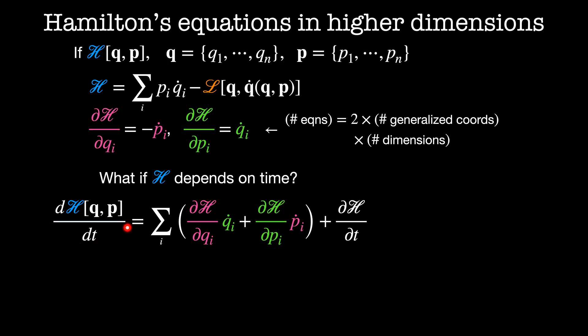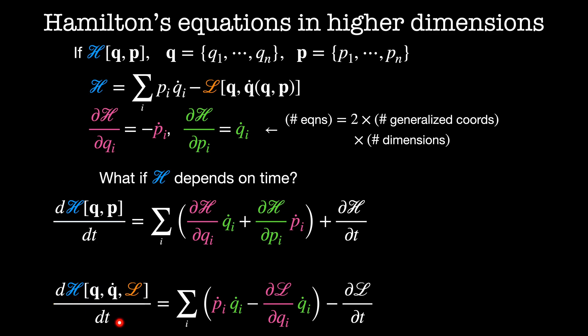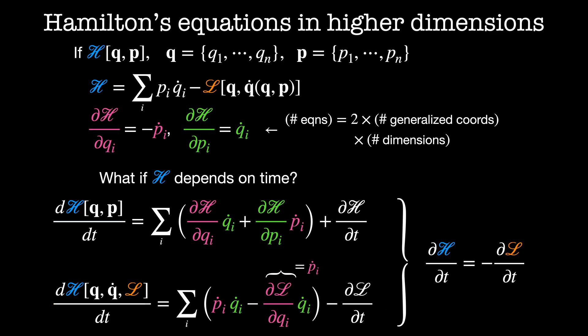Let's look at this again using the other definition of the Hamiltonian as a function of P_i, Q_i, and the Lagrangian. Then the total derivative of the Hamiltonian with respect to time is equal to the sum on i of P_i dot times Q_i dot minus dL by dQ_i times Q_i dot, minus the partial derivative of the Lagrangian with respect to time. From the Euler-Lagrange equations, the first two terms cancel out, and we're left with the total derivative of the Hamiltonian with respect to time equal to minus the derivative of the Lagrangian with respect to time. This relates the dynamics of the Hamiltonian to the dynamics of the Lagrangian.